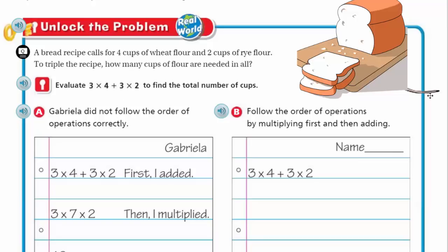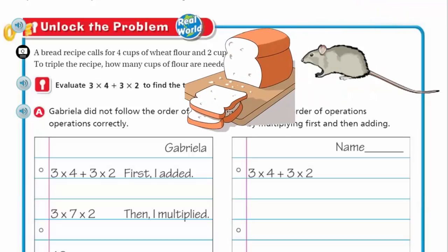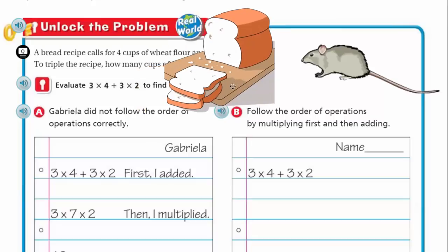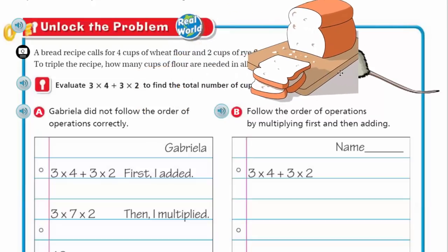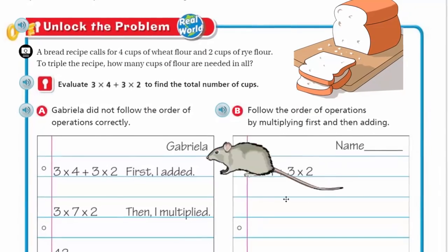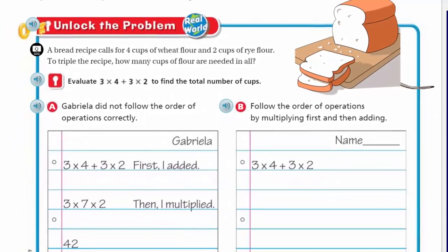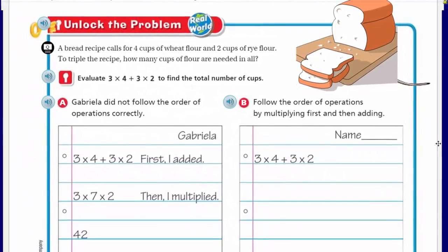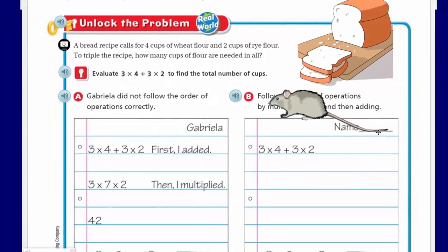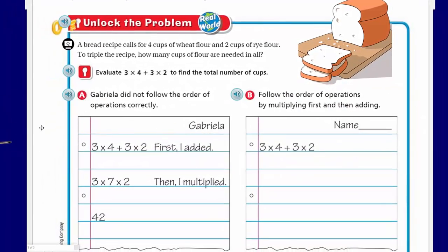It's a rat! A rat was going after my bread! Hey buddy, what are you doing here? Get out of my bread! I got rid of him and he came right back. Get out of there too. Goodbye.